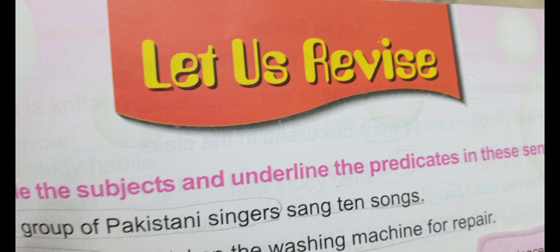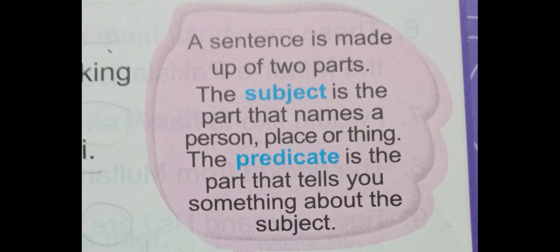The first exercise of this topic is Subject and Predicate. Subject and predicate are basically the two parts of a sentence. A sentence is a group of words that makes sense. For example, words like 'book favorite Ali' are a group of words but they do not make any sense, so they do not form a sentence. A group of words must make sense to be a sentence.